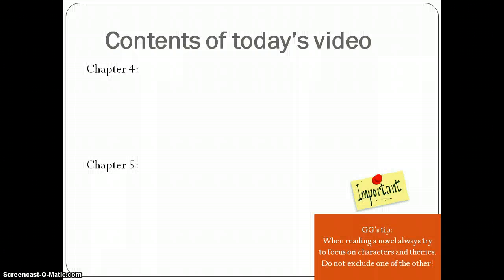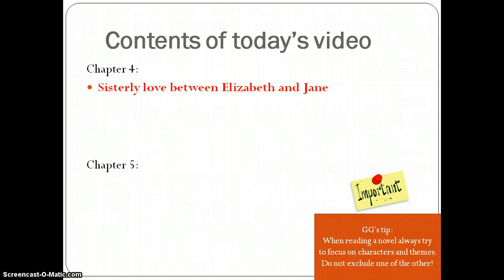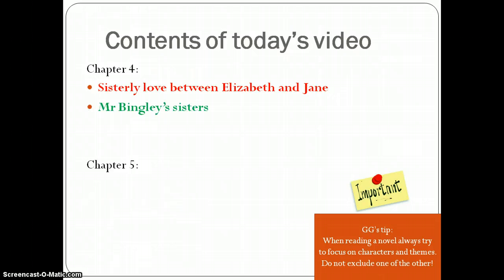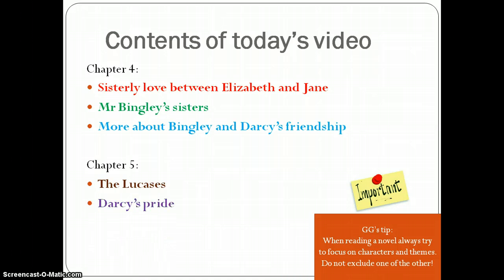Today we are going to look at the most important themes, characters, and of course events in chapters 4 and 5 of the novel. Chapter 4 focuses on sisterly love between Elizabeth and Jane, Mr Bingley's sisters, and more about Bingley and Darcy's friendship. Chapter 5 focuses on the Lucases and Darcy's pride.